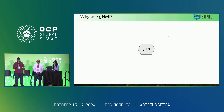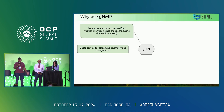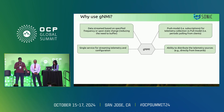Why use GNMI? GNMI is a single interface for both telemetry and configuration. Streaming is based on a specified frequency or upon state change, which can be selected by the controller or the client. It supports a push model — that is, subscriptions — instead of a pull model. It can deliver any telemetry from any of the sources within the switch, like directly from line cards. As long as there is a yang model to support it and there's a source for it, GNMI can retrieve the telemetry.